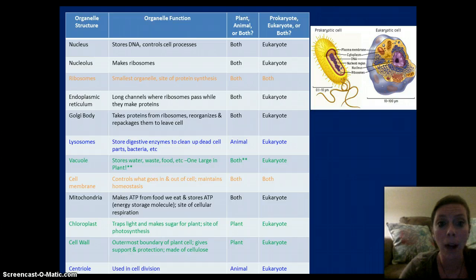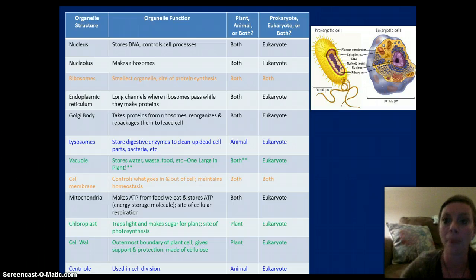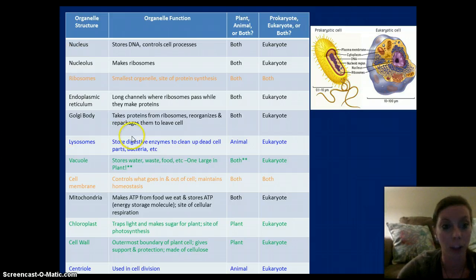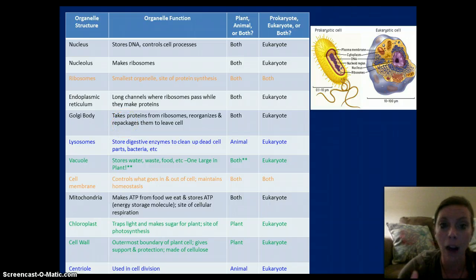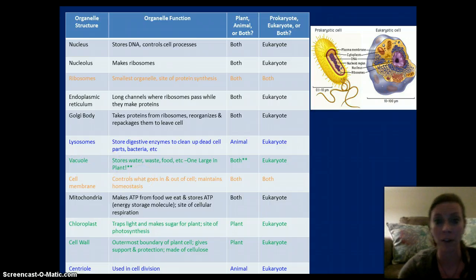We have the Golgi body, which is going to take the proteins and products produced in the ribosomes, package them, sort them, and send them outside of the cell. It's found in plant and animal eukaryotic cells. We have lysosomes, only found in animal cells, which clean up dead parts of the cell as well as bacteria and food waste. We have the vacuole — again, found in both cells, but only a large central vacuole is found in plant cells — and it stores water, waste, and food.